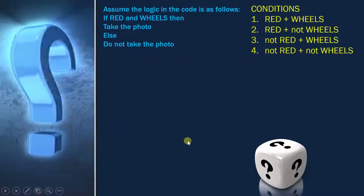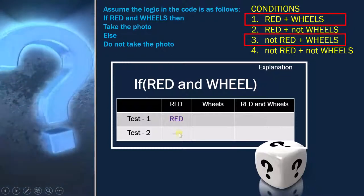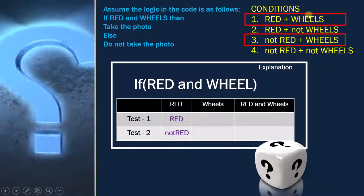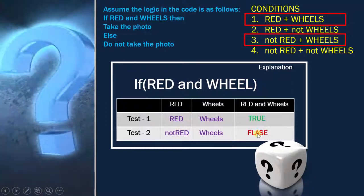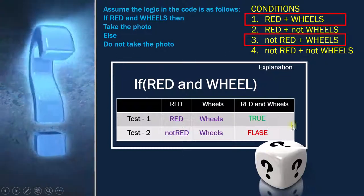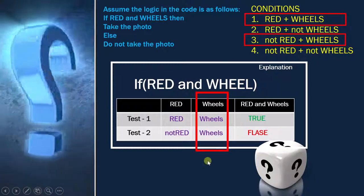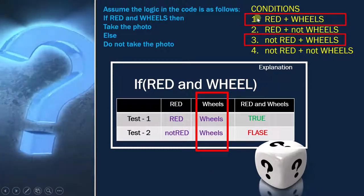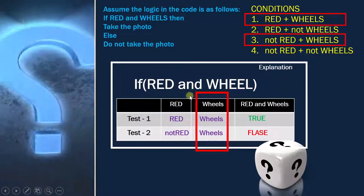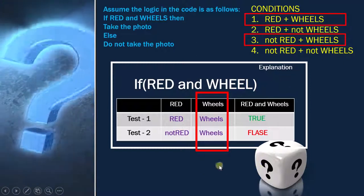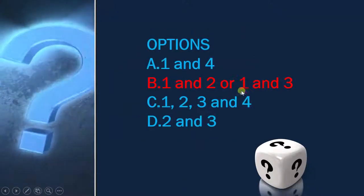Now let's see the next example: combining options 1 and 3. We get red and not red for the light, and wheel and wheel for the wheel condition. The decision is true for option 1 and false for option 3. We have achieved 100% decision coverage, but since 'wheel' is true in both cases, we have not achieved 100% condition coverage. So we can take 1 and 3 as another valid option. Both combinations — 1 and 2, and 1 and 3 — achieve 100% decision coverage but not 100% condition coverage. That is your answer.